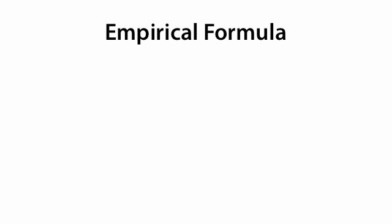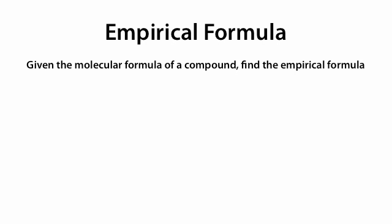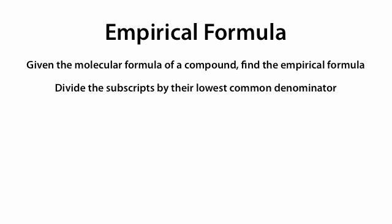Next we're going to talk about empirical formulas. Given the molecular formula of a compound, we will be able to find the empirical formula. The key is to divide the subscripts of the molecular formula by their lowest common denominator — similar to when we were finding the formulas of ionic compounds, where we looked at the subscripts, found the lowest common denominator, and divided each subscript by it.